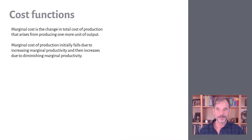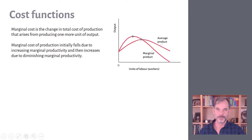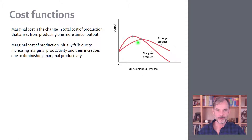Now let's look at the relationship between production functions and cost functions. I've covered marginal productivity — initially increasing productivity with each unit of labor added, reaching a peak, and then falling. How does that relate to costs?